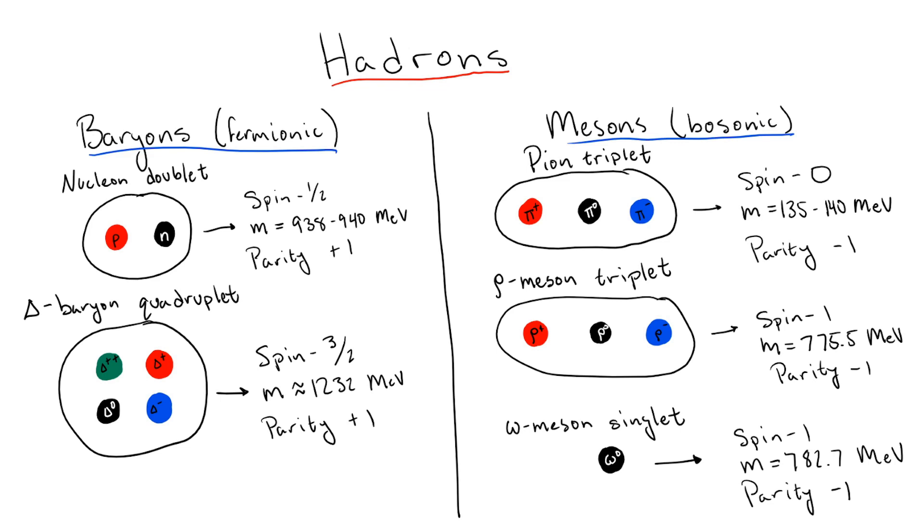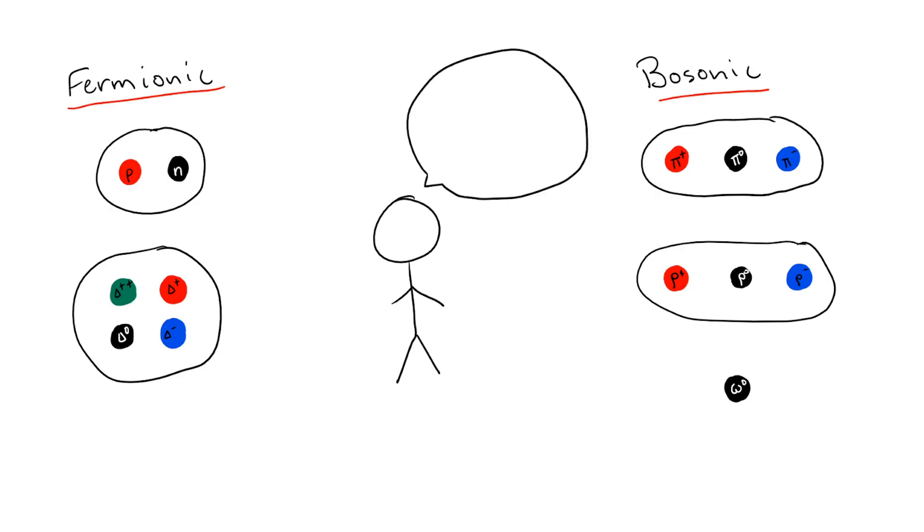Now, if you've taken an introductory quantum mechanics course, the sizes of these groupings, paired with their fermionic and bosonic natures, may look a bit familiar. In particular, they look suspiciously like the families of states we get when coupling together various numbers of spin half fermions.